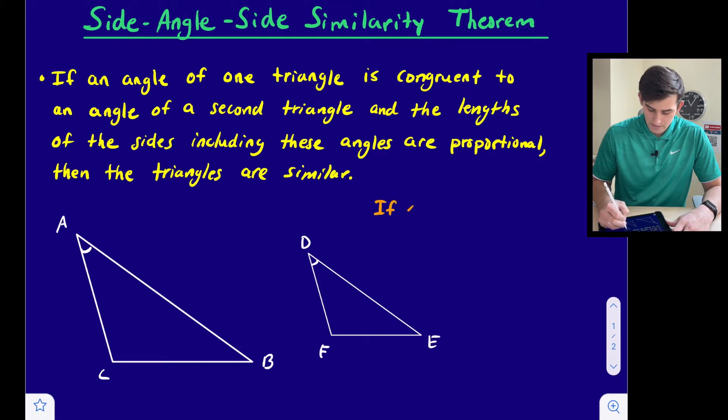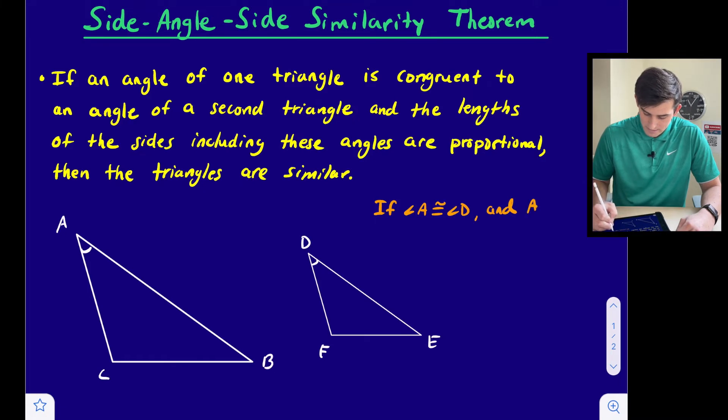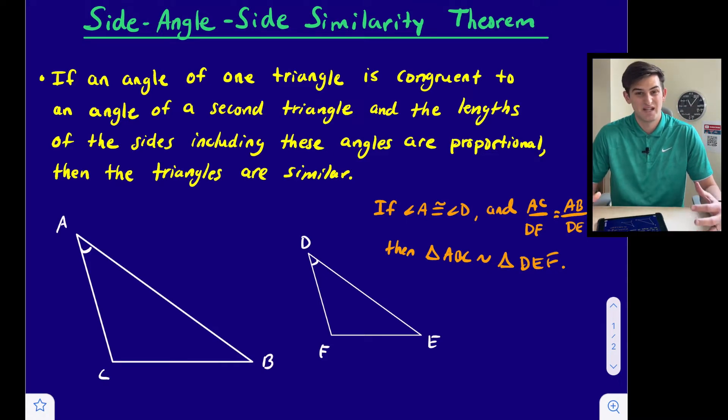So if angle A is congruent to angle D, now we need to look at the corresponding sides, or the sides that contain that angle. If they are proportional then we can say these two triangles are similar. We would say AC over DF is equal to AB over DE. If that's the case then we can say triangle ABC is similar to triangle DEF. So side angle side.